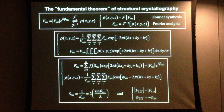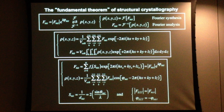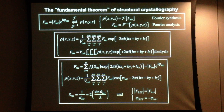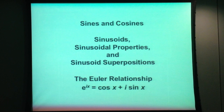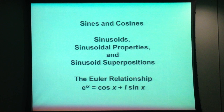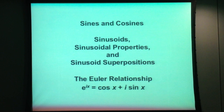All of this depends on the properties of the sine and cosine functions and their expression in terms of a complex exponential function. In order to dig into the Fourier theory of crystal structure analysis, we need to review some mathematics. The rest of today, and probably some on Friday, will be spent reviewing some really basic mathematics—in particular, the properties of sines and cosines, the superposition of sinusoidal functions, and the centrally important Euler relationship, which relates the cosine and sine functions to the complex exponential function.